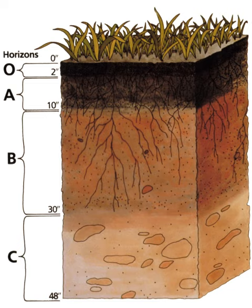A pore is not simply a void in the solid structure of soil. The various pore size categories have different characteristics and contribute different attributes to soils depending on the number and frequency of each type. A widely used classification of pore size is that of Brewer. Macropores are pores that are too large to have any significant capillary force; unless impeded, water will drain from these pores and they are generally air-filled at field capacity.